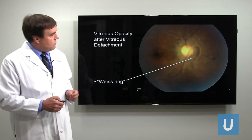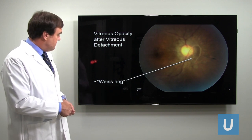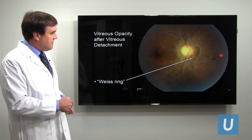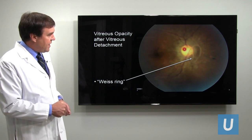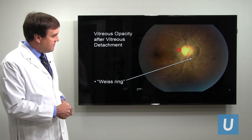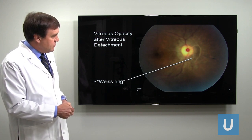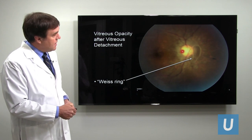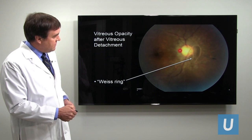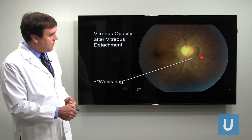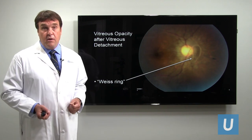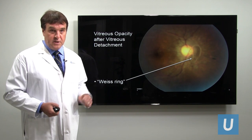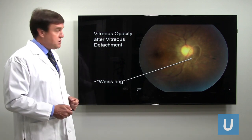Here's an example of what we call a Weiss ring — you can see this opacified vitreous area right here. This ring was actually attached to the optic nerve, visible in the background, where the nerve enters the eye and connects the retina to the brain. When the vitreous detached, this ring-like opacity is now floating in the eye cavity, possibly causing a lot of bothersome shadowing and floaters for the individual who's had the vitreous separation.